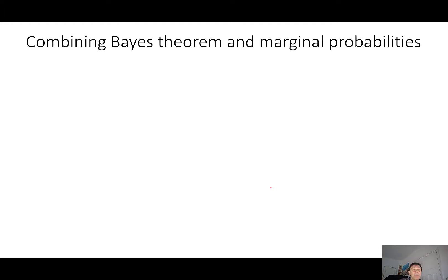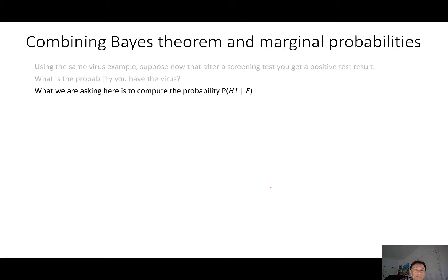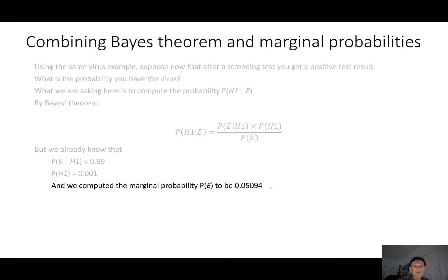And we can now combine Bayes' theorem and the marginal probabilities to answer the question of interest for the virus example. So you've had a screening test, and you get a positive test result. What's the probability that you have the virus? So we're asking here to compute the probability of h1 given e, the posterior probability of h1. And by Bayes' theorem, we know that that's equal to that formula. The probability of e given h1 times the probability of h1 over the probability of e. But we already know that the probability of e given h1 is that. We know the probability of h1 is that. And we already computed the marginal probability p of e to be that.